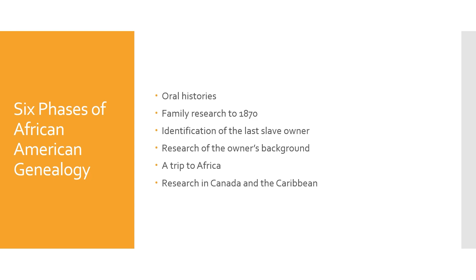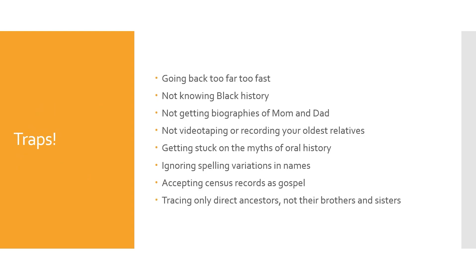He outlines six phases of African American genealogy, including getting oral histories, researching the family to 1870, identifying the last slave owner, researching the owner's background, making a trip to Africa, and researching in Canada and the Caribbean. There are what the author calls traps sprinkled throughout the text, and here are a few of them.